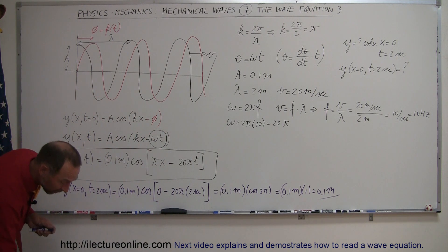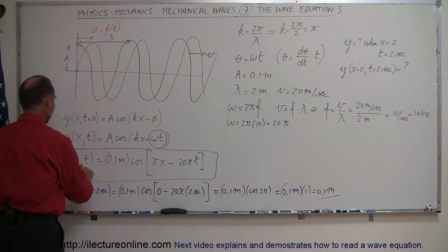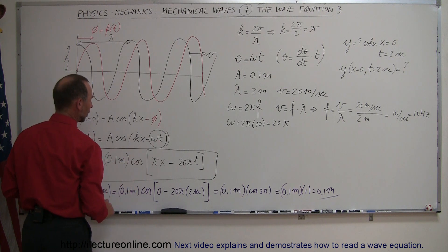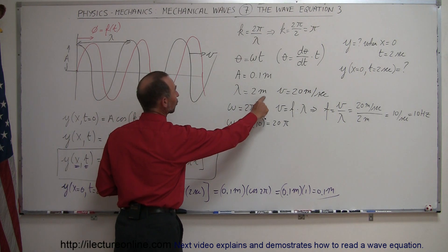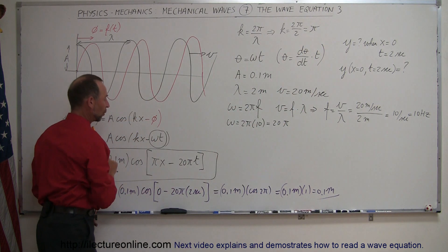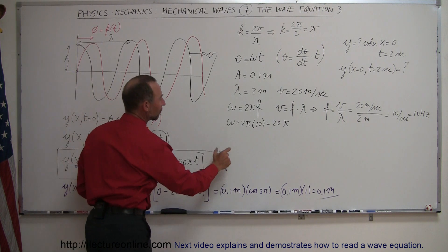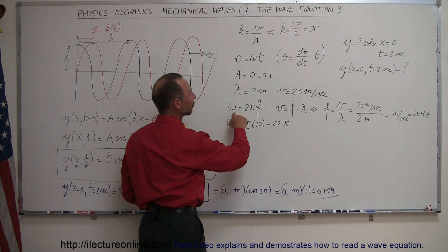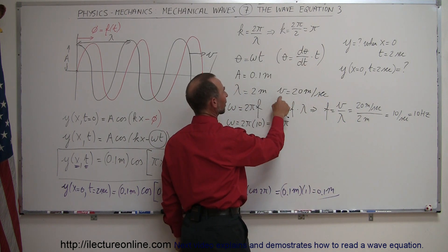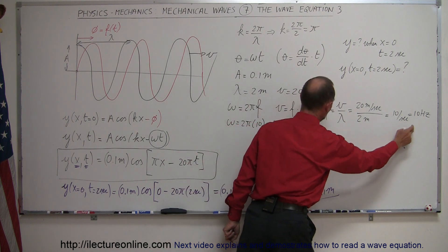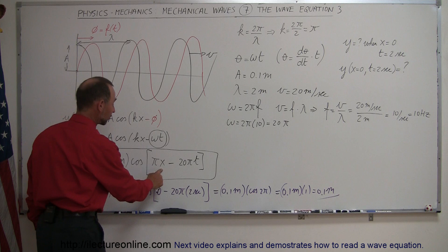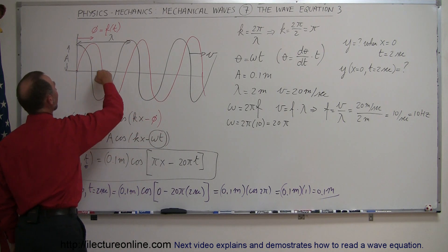So the wave equation is a function of both x and t: y = A cos(kx − ωt). The wave number k = 2π/λ, which for a 2-meter wavelength gives k = π. The angular frequency ω = 2πf, and since frequency = velocity/wavelength = 20/2 = 10 Hz, we get ω = 20π. Plug in any position x and time t to get the displacement at that point in time. This is the wave equation describing a traveling transverse wave.